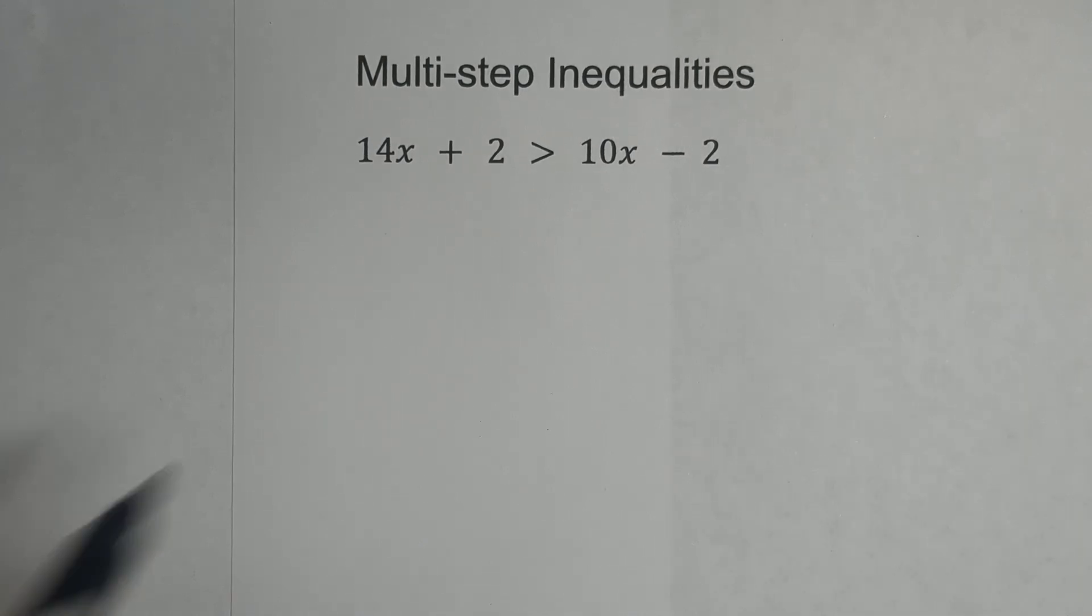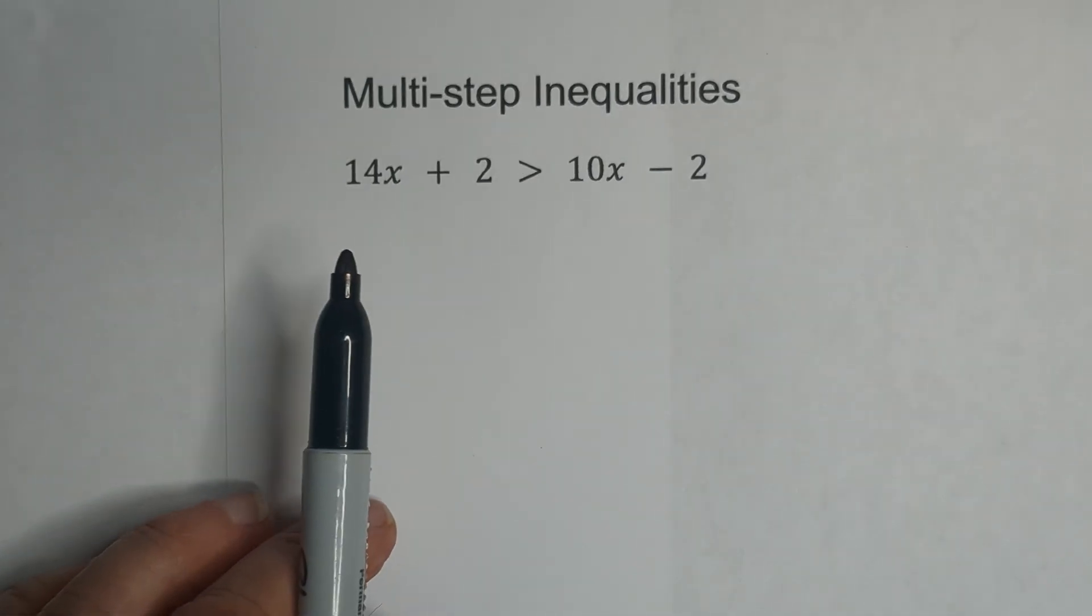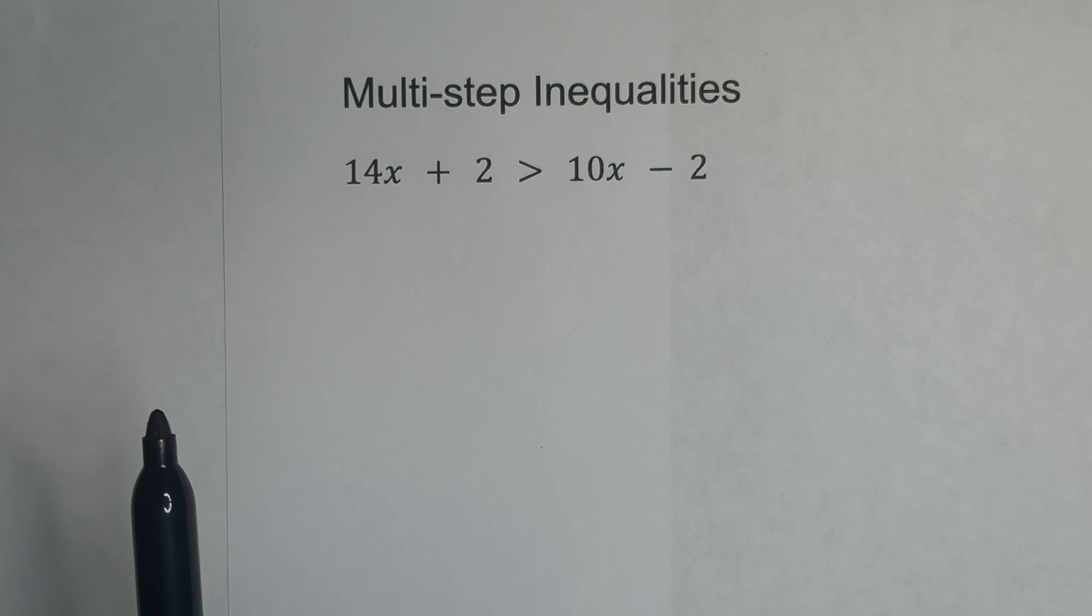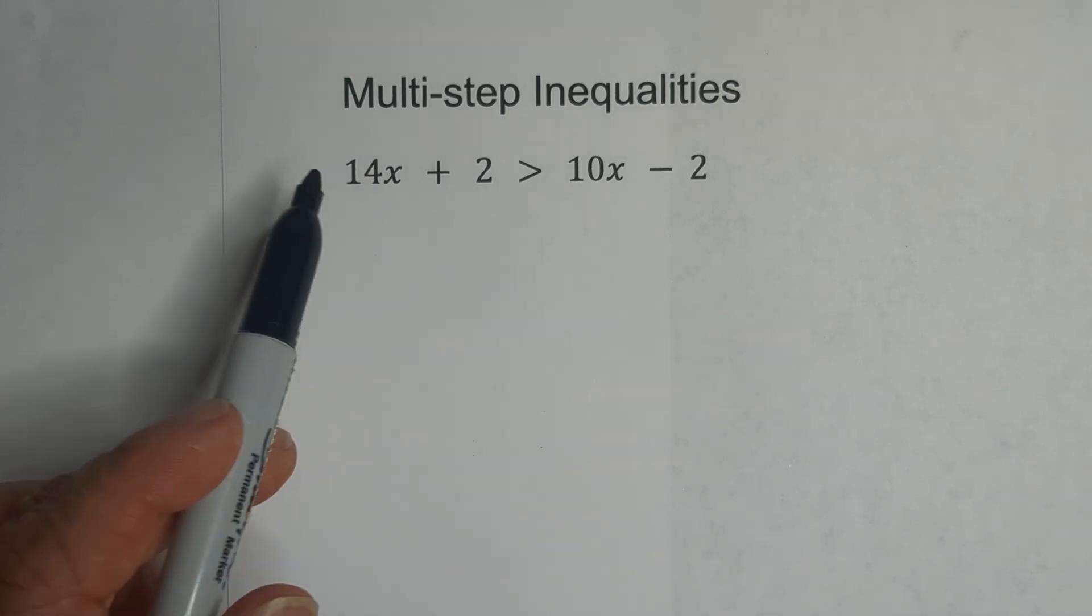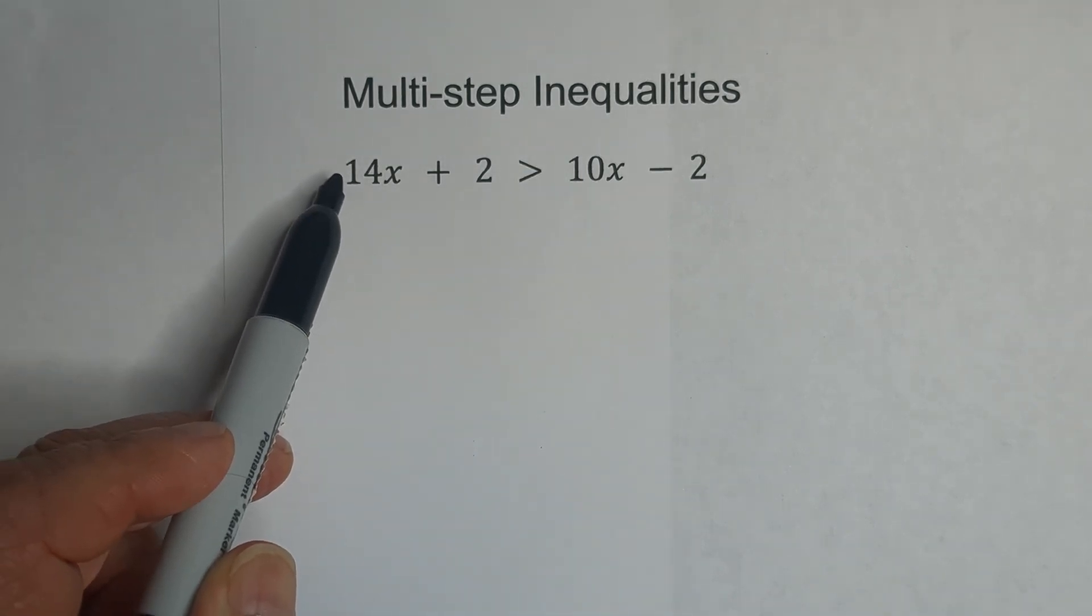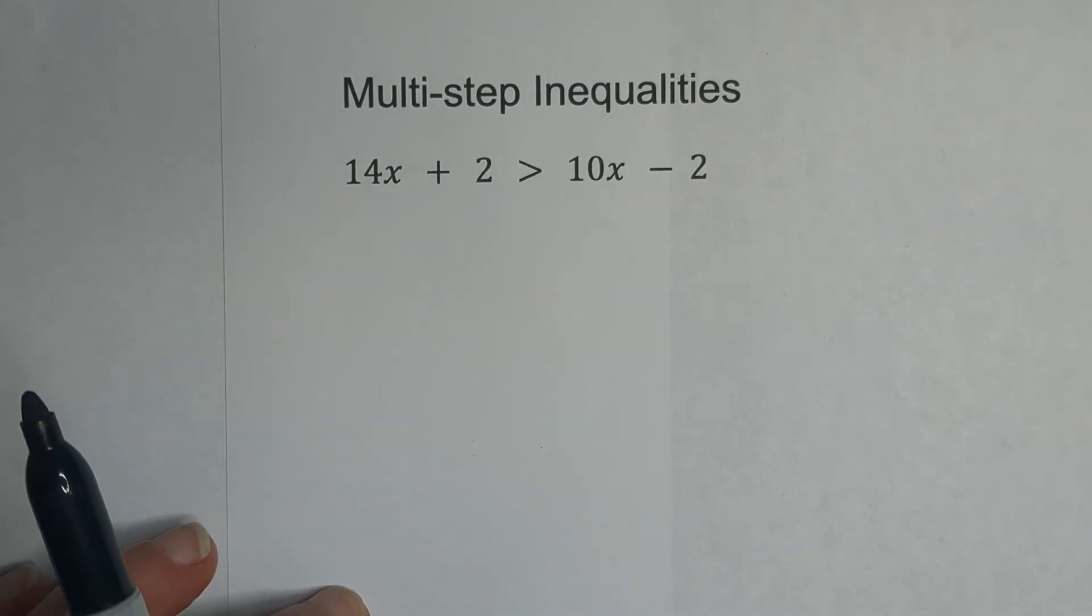Whenever we have a multi-step inequality and you divide through by a negative number, you have to flip the sign. So one of the ways to help avoid the negative numbers is you can subtract the smaller variable from the larger. That way you avoid a negative number.